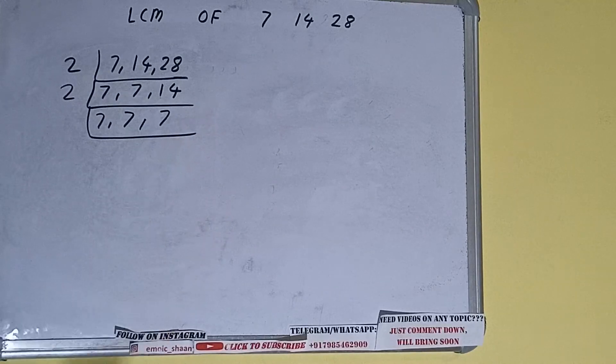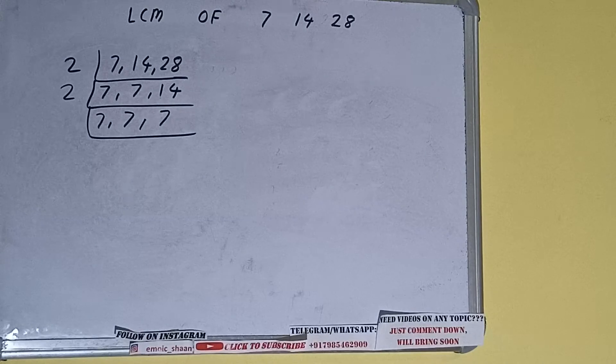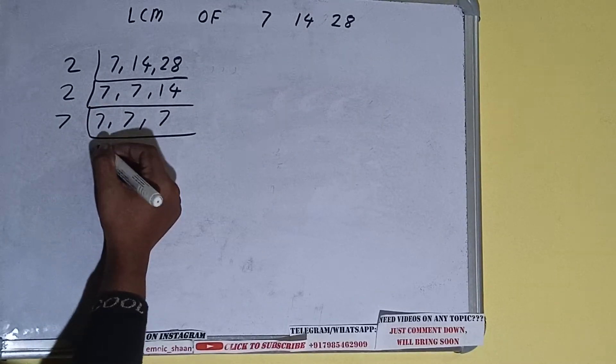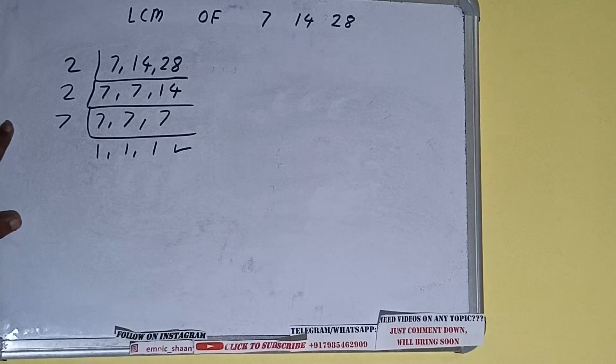Now if we check, none of the numbers is divisible by 2. And if you see, the number 7 is a prime number, that means it is only divisible by itself, that is 7. And once we do so, we'll be getting all the numbers as 1. Once we get that, we need to stop and do one last thing.